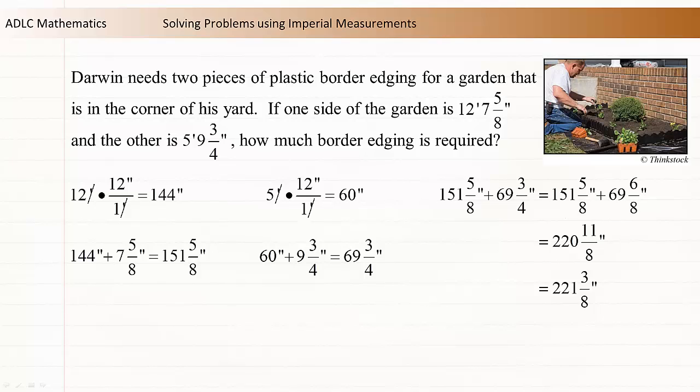We can remove the improper fraction by subtracting 8 eighths and adding 1 inch to the measurement. 221 and 3 eighths inches of plastic border edging is required.